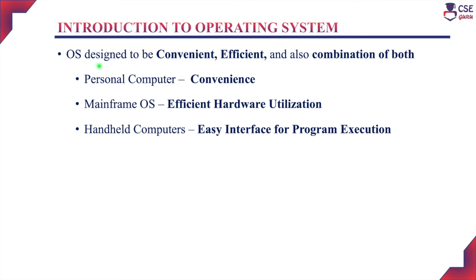The primary aim of designing the operating system depends upon the type of user using the system. Accordingly, the operating system is designed to be convenient, efficient, or a combination of both.